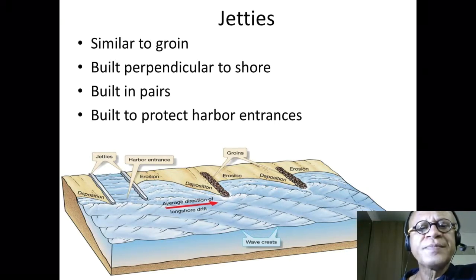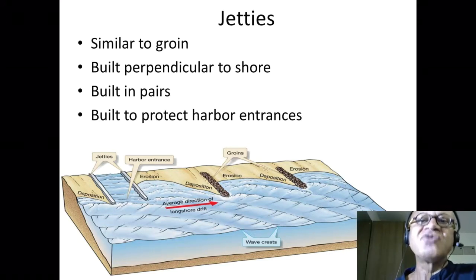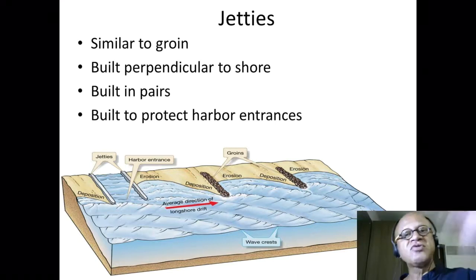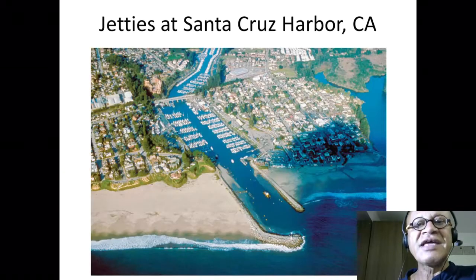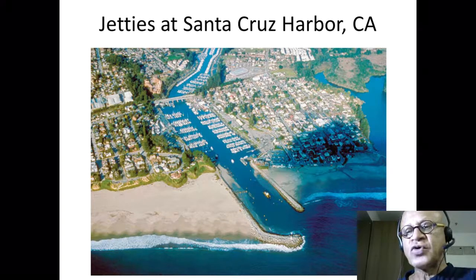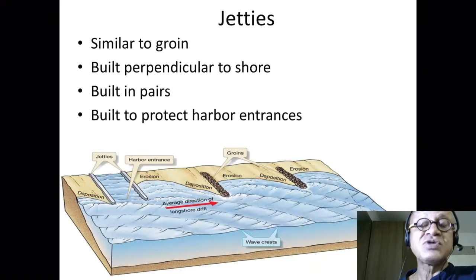Jetties are also built perpendicular to the shore, typically in pairs to create a passageway and a wave shadow behind them — protected harbor entrances for boats. Here is the jetty at Santa Cruz Harbor in California. You can see the beach is completely starved on one side and sand is piling up on the other, indicating the direction of longshore drift. This is a real-life situation, not a cartoon diagram.